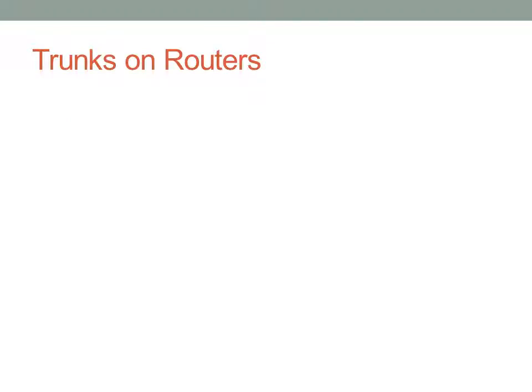So we're going to start out with trunks on routers. Now, trunks are a concept that we've talked about on switches where multiple VLANs can be passed over a single Ethernet link, and the way we distinguish between those VLANs is using VLAN tags. Now, on routers you can't just issue a switch port mode trunk command, because we don't configure VLANs on routers - each interface has a separate IP address. So what we have to do is we have to create what are called sub-interfaces.